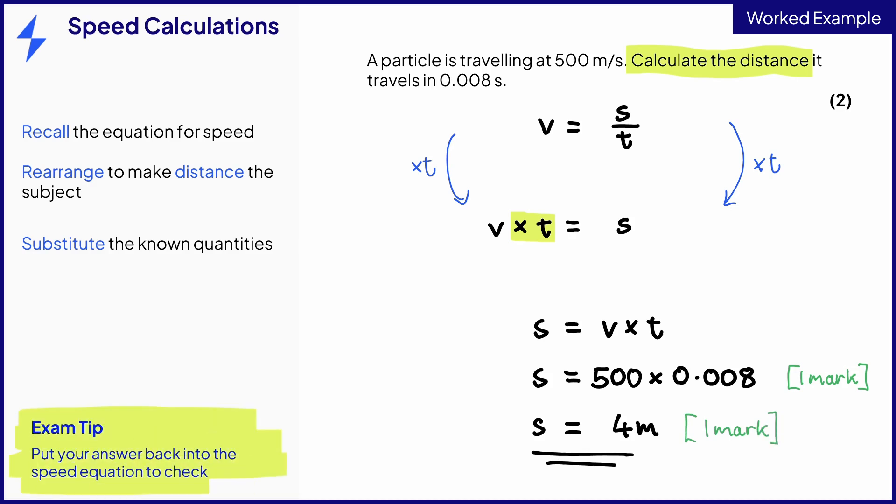To double-check your answer, put it back into the original equation along with 0.008 seconds and see if you get a speed of 500 meters per second. If you don't, you have made a mistake rearranging.